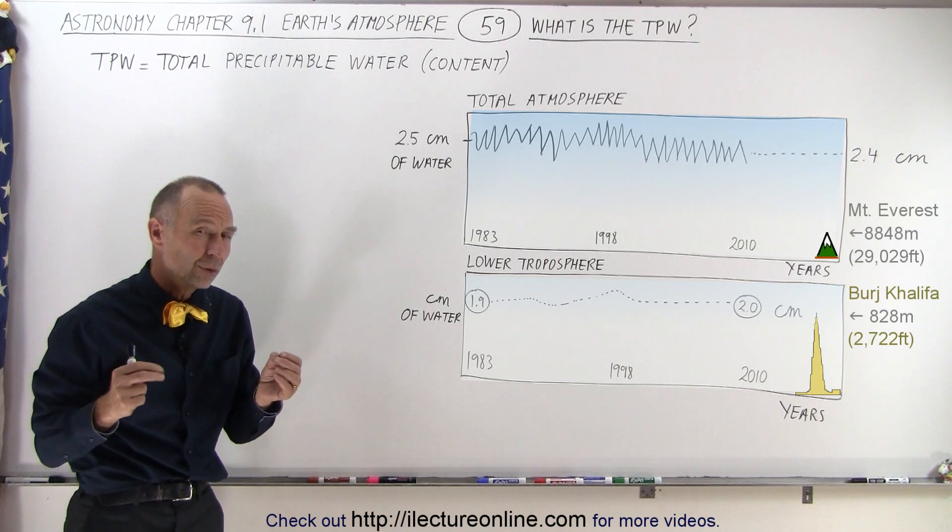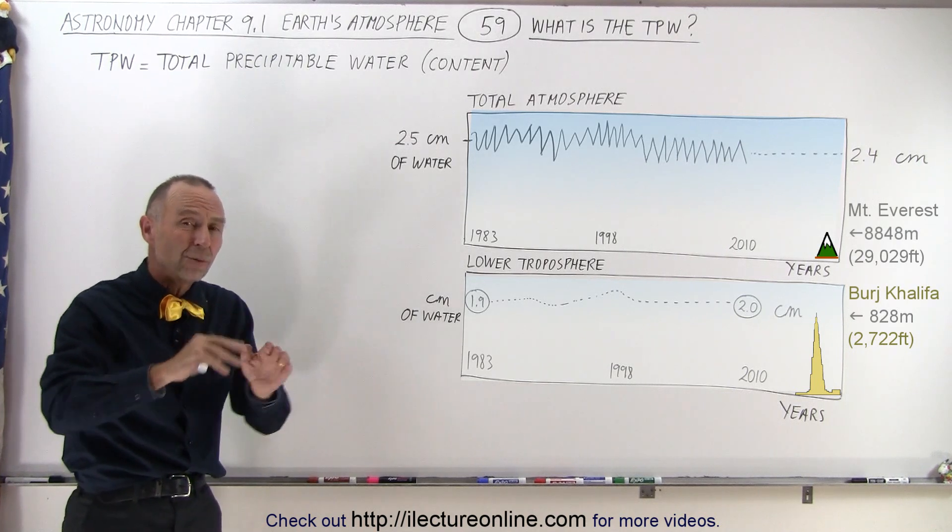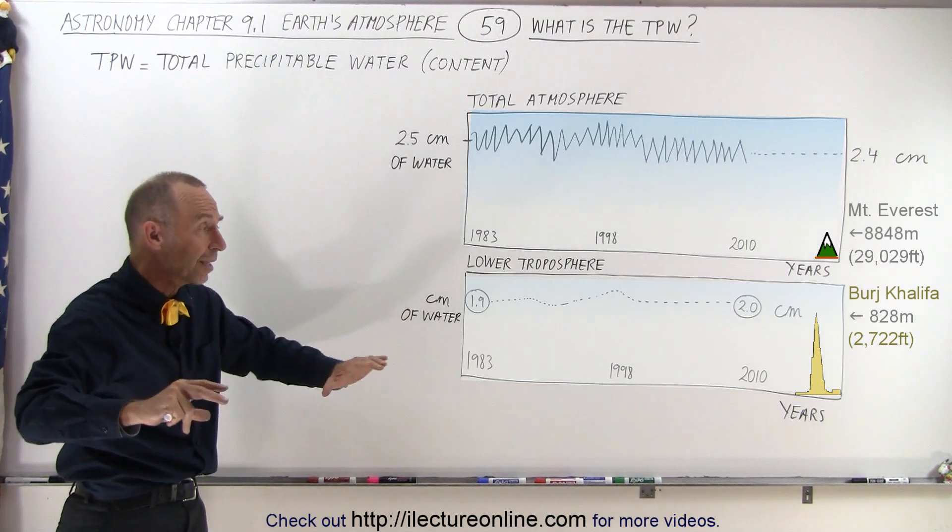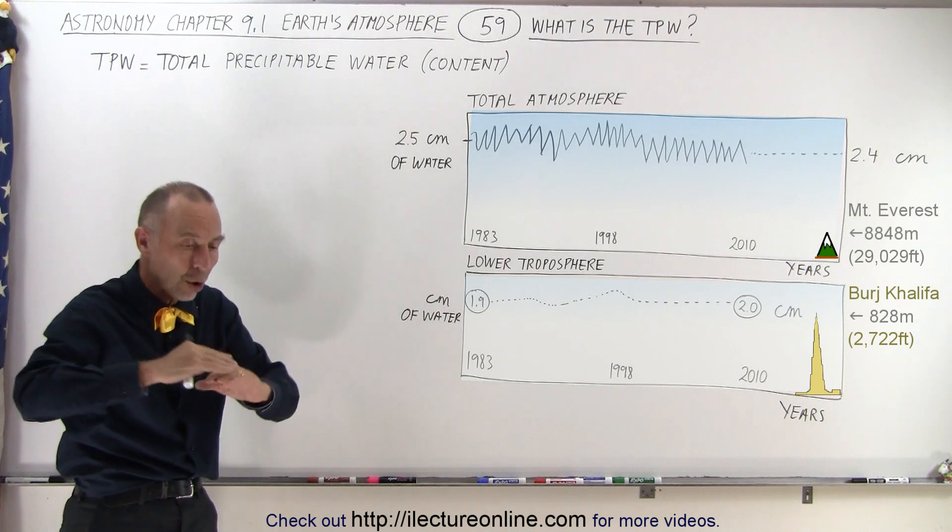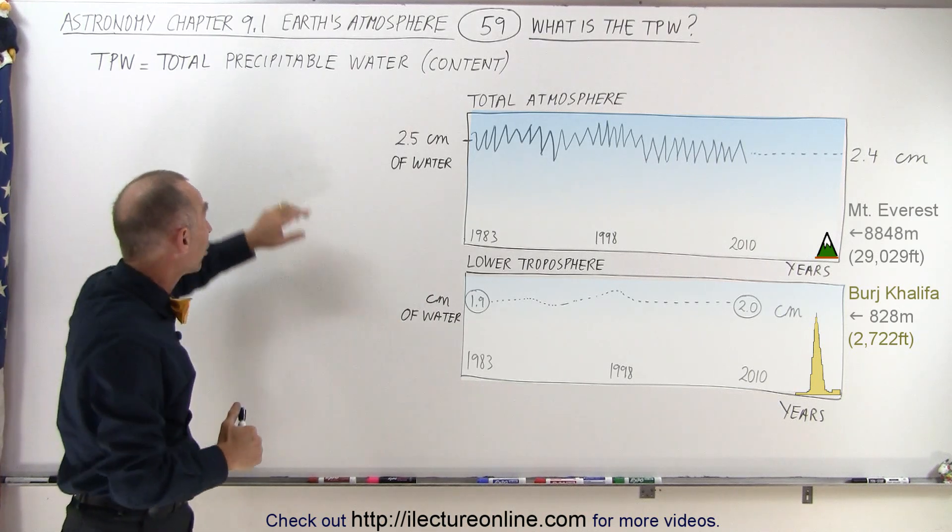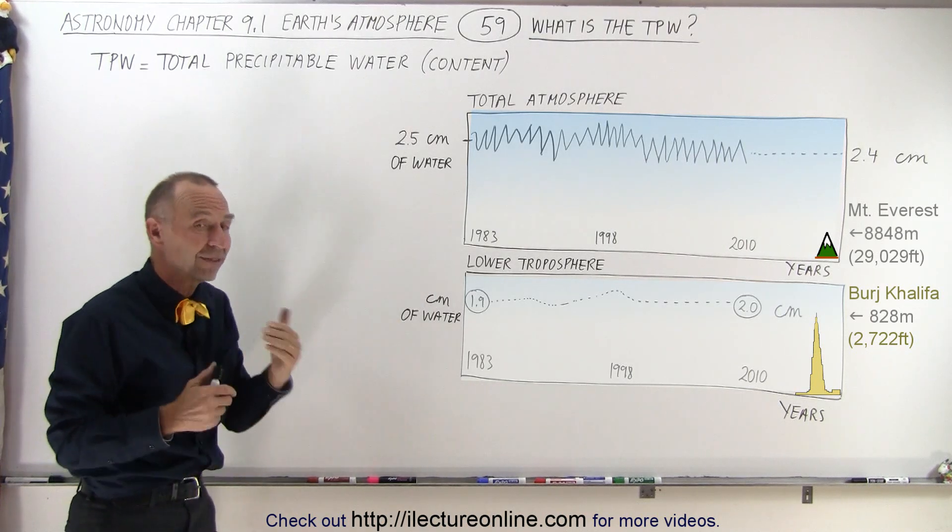But again, we do see that there's been a slight increase in the lower troposphere water content. If we just take a look at all the water available—that's called precipitable water—we can see that